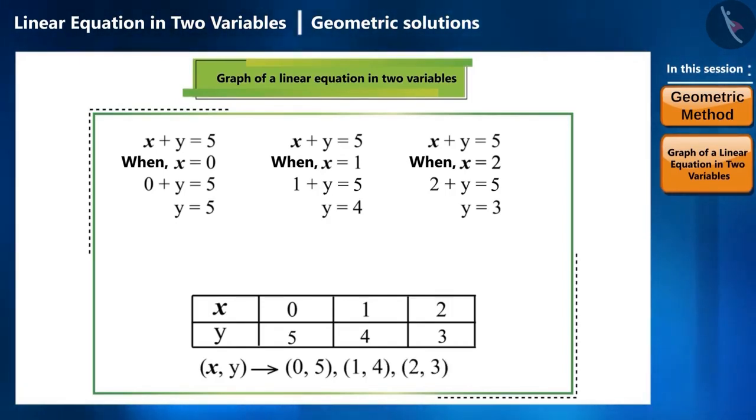Friends, we can identify countless coordinate points like this, not just 3. But on a graph paper, two points are enough to represent a line on the x, y axis.